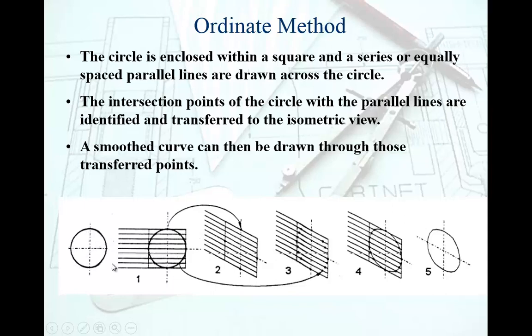Basically, that's the front view of the circle you want to create the isometric view of. We have the center lines here, the vertical axis and horizontal axis. The first step is to box the circle.